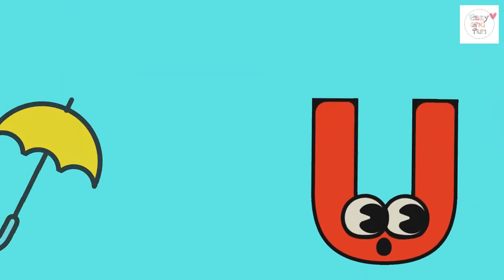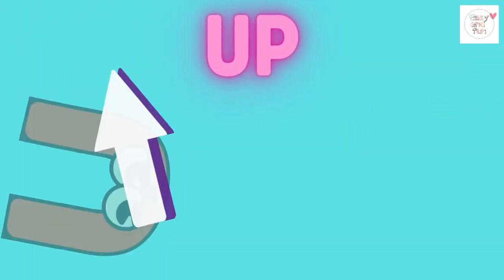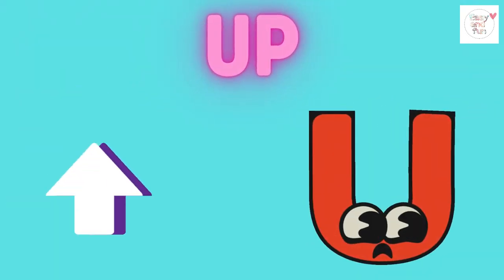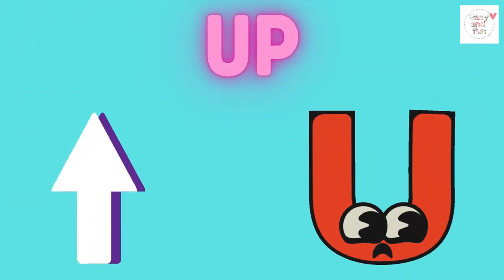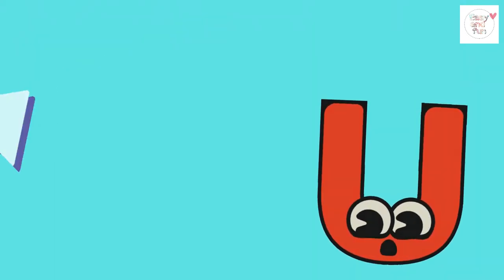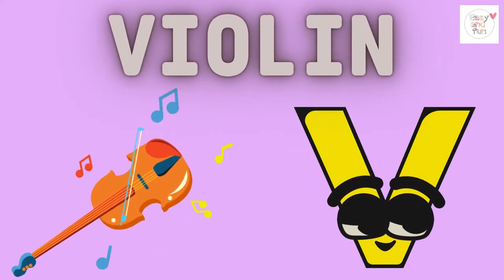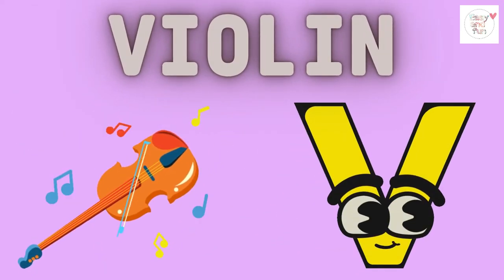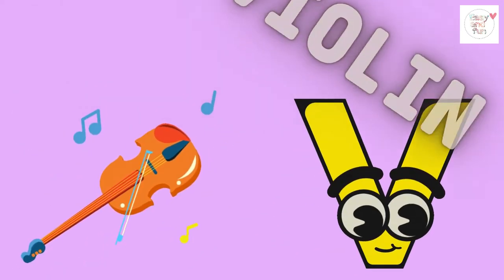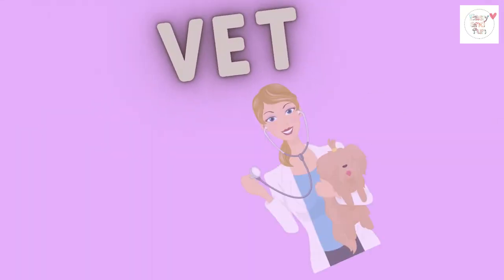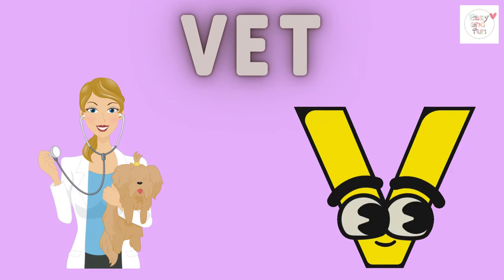U is for umbrella, u-u-umbrella. U is for up, u-u-up. V is for violin, v-v-violin.